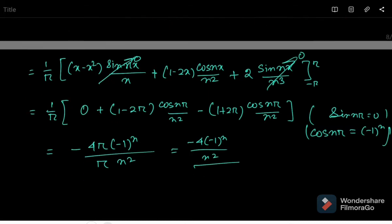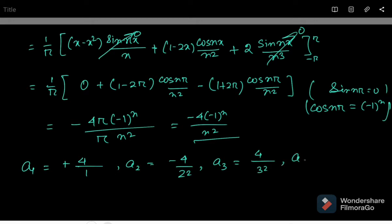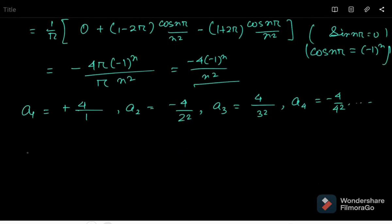So ultimately aₙ = minus 4(-1)ⁿ / n². We can find a₁ = 4 (since (-1)¹ gives a negative sign), a₂ = minus 4/2², a₃ = minus 4/3², a₄ = minus 4/4², and so on. Now let's find bₙ.